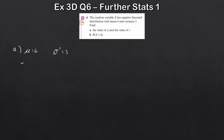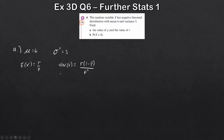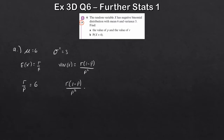We're told that the mean μ is 6 and the variance is 3. The formulas you need to know are: the expectation of X is equal to r over p, and the variance of X is r times (1 minus p) all over p squared. Since we don't know r and p, we set up simultaneous equations: r over p equals 6, and r(1−p) over p² equals 3.